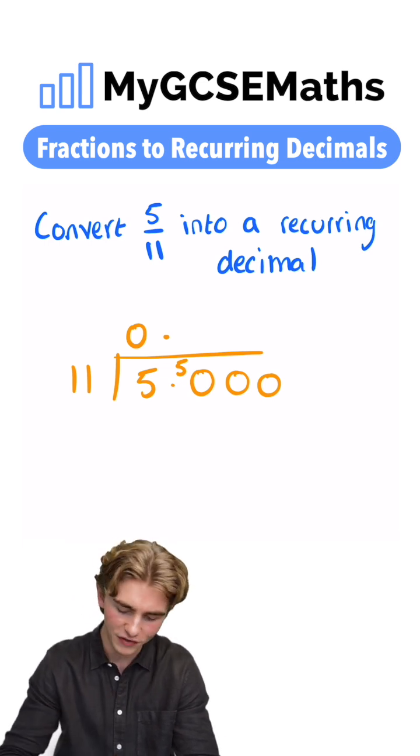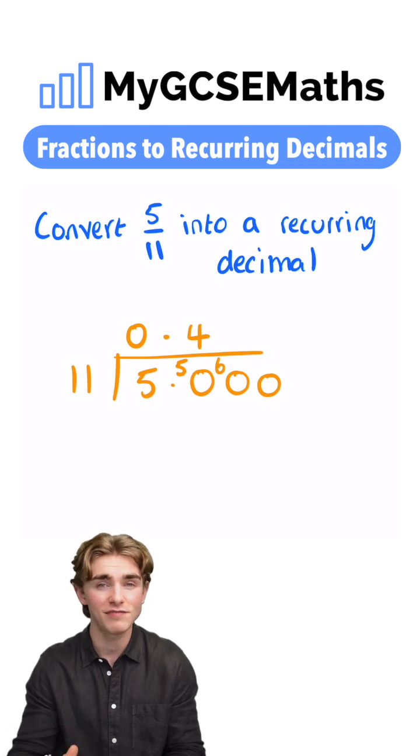Our last multiple of 11 is going to be 44. 4 goes in and it's going to be remainder 6 because 50 is 6 bigger than 44.